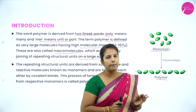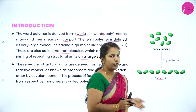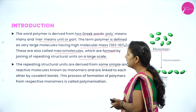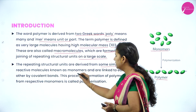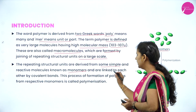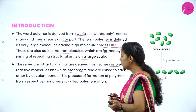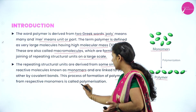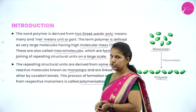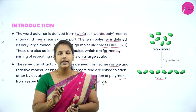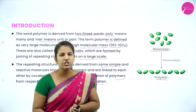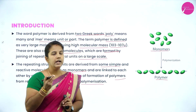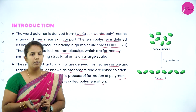Polymerization is the process of preparing a polymer from monomers. The repeating structural units are derived from the simplest reactive molecules known as monomers. They are linked to one another by covalent bonds. This formation of polymers from respective monomers is called polymerization. Monomers are the simplest reactive molecules.